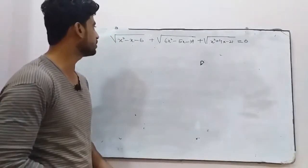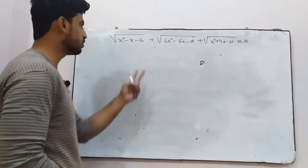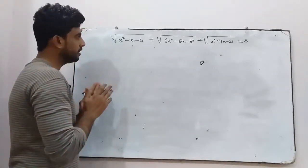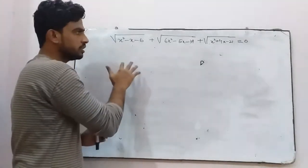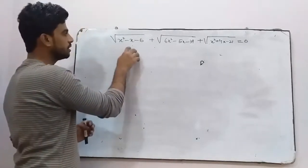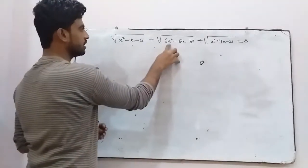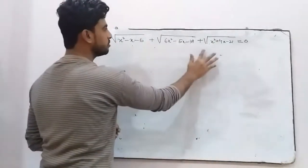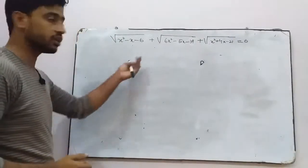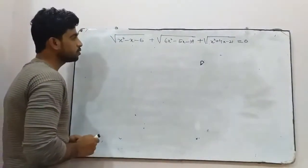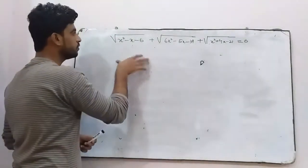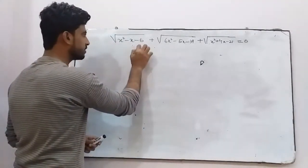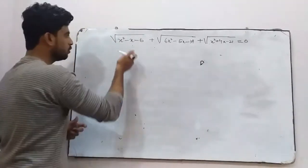In this video we'll discuss Type 2 of equations involving radicals. Type 2 says: whenever all terms inside the radicals are quadratics — meaning maximum degree is raised to the 2 — those terms inside the radicals are quadratic. To solve this type of equation, first we have to factorize inside the radicals.